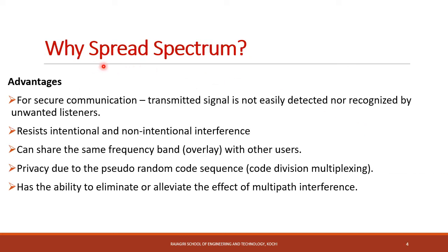The significance of spread spectrum modulation is that it has several advantages. It can be used for secure communication, which means that the transmitted signal is not easily detected or recognized by unwanted listeners. It can also resist both intentional and non-intentional interference. Another advantage is that two users can share the same frequency band, as each user is distinguished by the use of a unique spreading code.